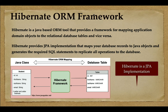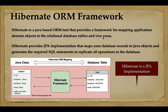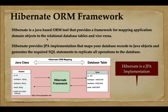Hibernate is a Java-based ORM tool that provides a framework for mapping application domain model objects with relational database tables and vice versa. JPA is just a standard specification and does not have any implementation. Hibernate ORM framework provides a JPA implementation — it is a JPA implementation provider. Since Hibernate is an ORM framework, we can use it to directly map domain model objects with relational database tables.